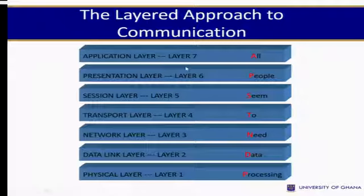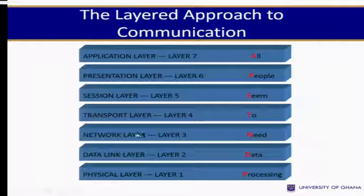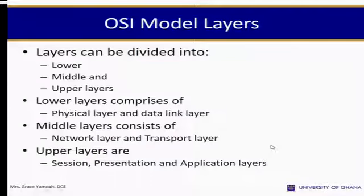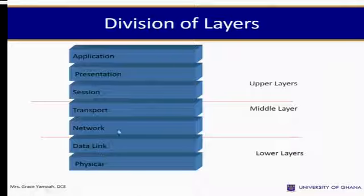A typical layer approach to communication includes: the physical layer (layer 1), data link layer (layer 2), network layer (layer 3), transport layer (layer 4), session layer (layer 5), presentation layer (layer 6), and application layer (layer 7). The layers can be divided into lower, middle, and upper layers. The lower layers comprise the physical and data link layers; the middle layers consist of the network and transport layers; and the upper layers are the session, presentation, and application layers.